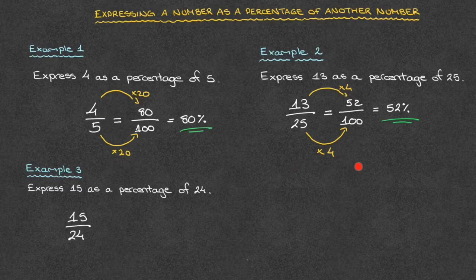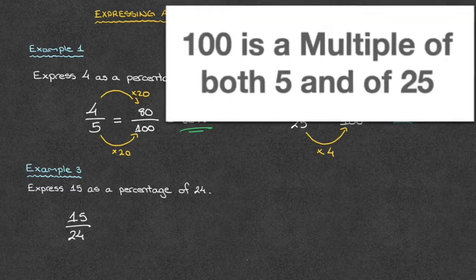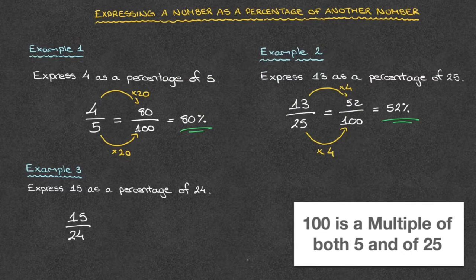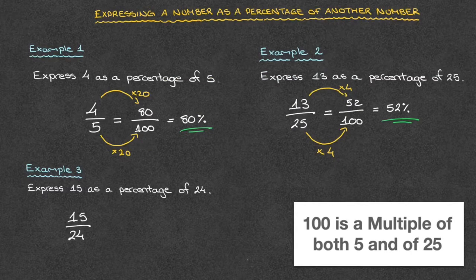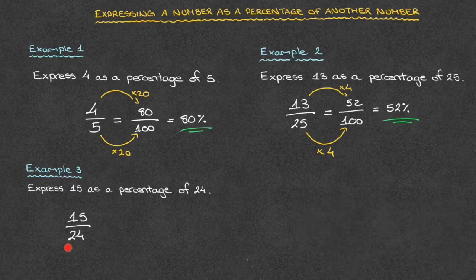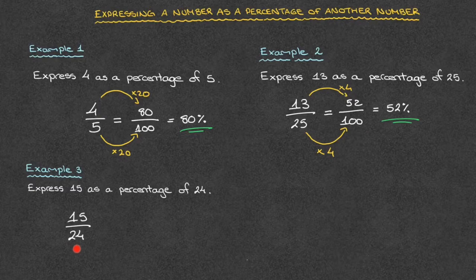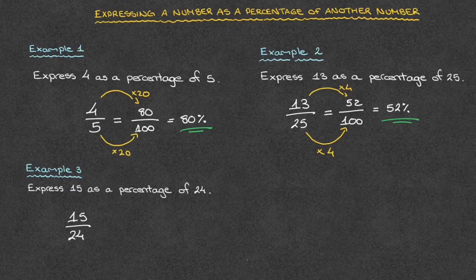Indeed, looking back at the first two examples, both the denominator 5 as well as the denominator 25 were factors of 100, which made it quite easy to write those fractions as equivalent fractions over 100. In this case, though, 24 is not a factor of 100. And when that happens, we use our calculator.